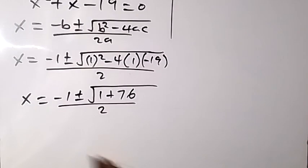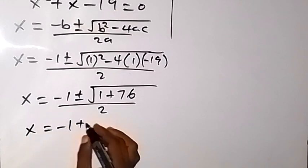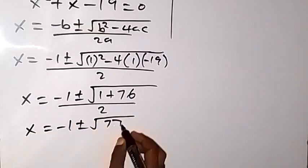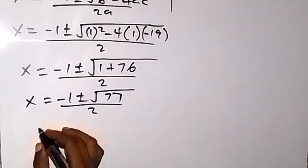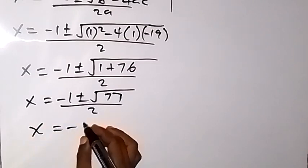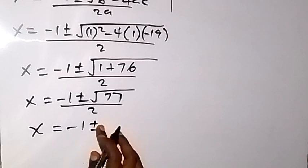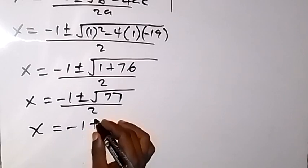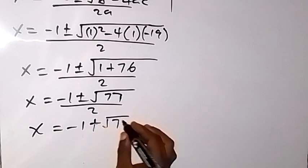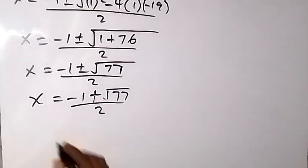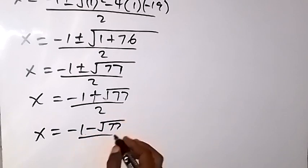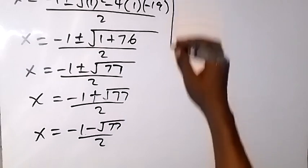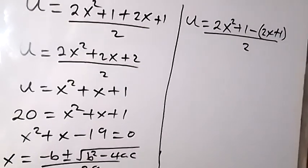This gives x equals negative 1 plus or minus square root of 77, all over 2. So the two values from Case 1 are x equals (negative 1 plus root 77) over 2, and x equals (negative 1 minus root 77) over 2.